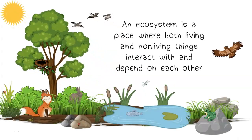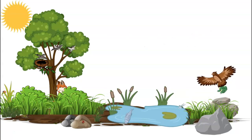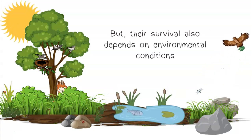An ecosystem is a place where both living and non-living things interact with and depend on each other. Living things depend on each other for survival, but their survival also depends on environmental conditions.